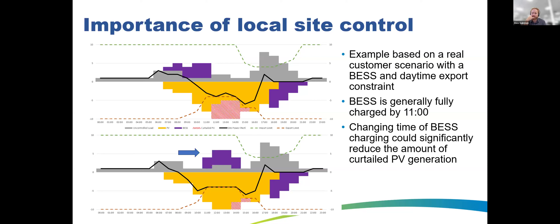Will proposed regulatory resets consider oversized transformers to enable export options for residential PV? If a transformer is overloaded with PV or load it can be triggered for augmentation, though that process is slow and costly. The whole point of operating envelopes is to reduce that need for augmentation. If customers are only curtailed one day per year, it makes more sense to reduce PV generation on that one day rather than spend significant dollars on transformer augmentation. But if customers are being curtailed every single day, then upgrading the network clearly makes more sense. It depends on the severity of the constraint.